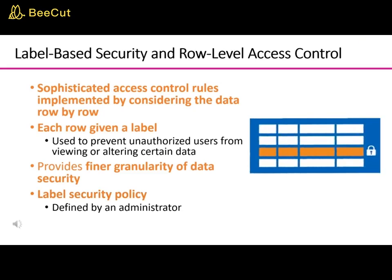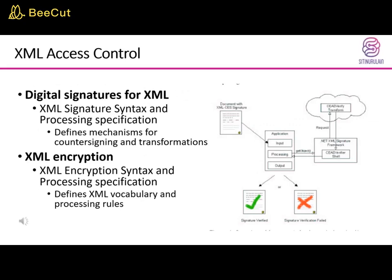With the worldwide use of XML in commercial and scientific applications, efforts are underway to develop security standards. Among these efforts are digital signatures and encryption standards for XML. The XML signature specification defines mechanisms for counter-signing and transformation — so-called canonicalization — to ensure that two instances of the same text produce the same digest for signing even if their representations differ slightly, for example in typographic white space. The XML encryption syntax and processing specification defines XML vocabulary and processing rules for protecting the confidentiality of XML documents, in whole or in part, and of non-XML data as well.